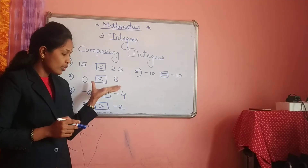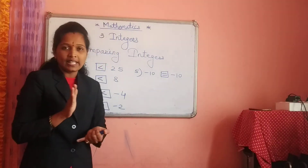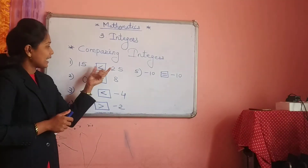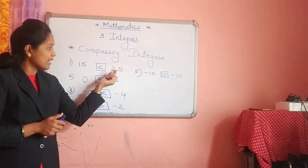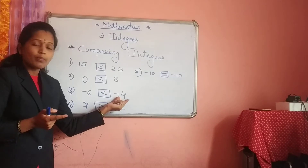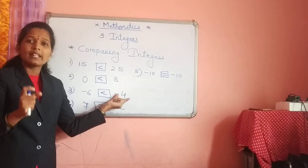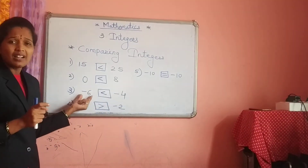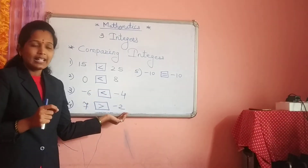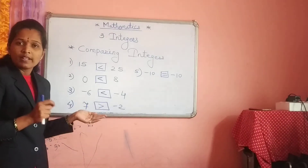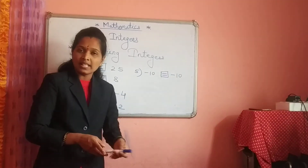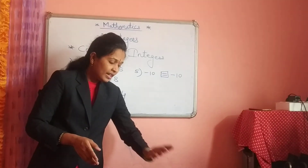In this way, you have to solve practice set number 7 — it is also very easy. Only remember these things: both numbers positive — the bigger number is greater. Both numbers negative — whichever is the smaller number, that is the greater one. One positive and one negative — the positive number is always bigger. And whenever two numbers are the same on both sides, we put the equals-to sign.